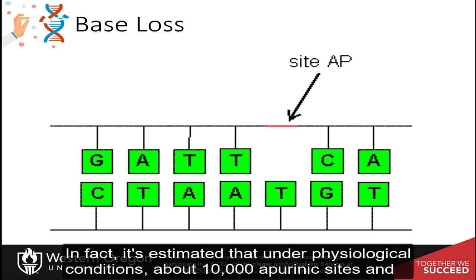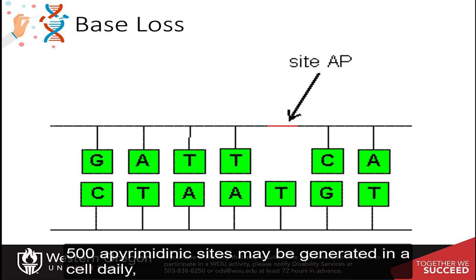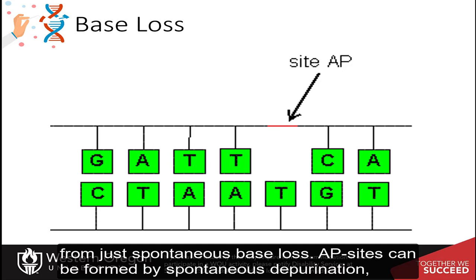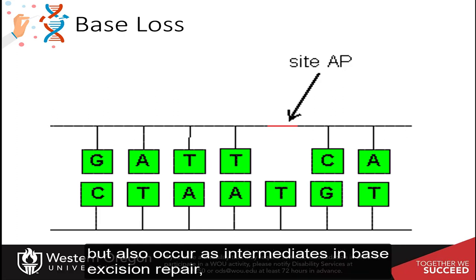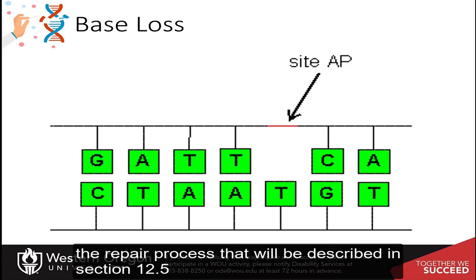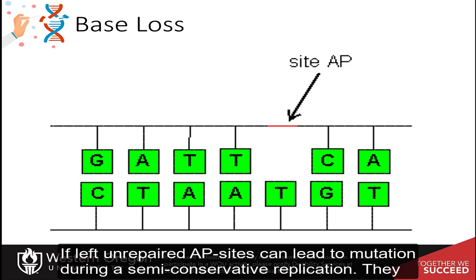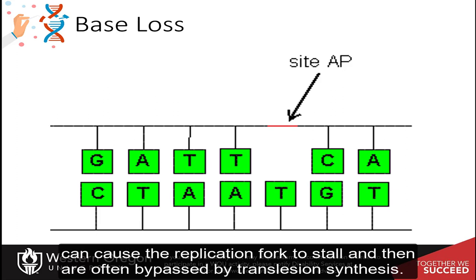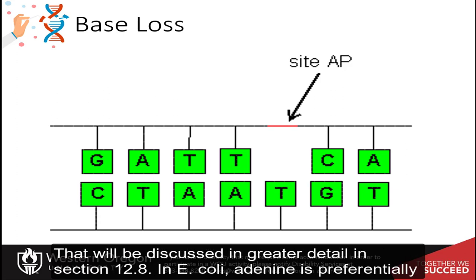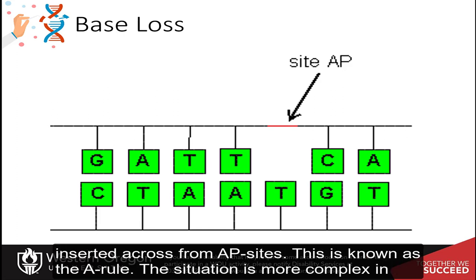Under physiological conditions, it is estimated that about 10,000 apurinic sites and 500 apyrimidinic sites may be generated in a cell daily from just spontaneous base loss. AP sites can be formed by spontaneous depurination but also occur as intermediates in base excision repair, the repair process described in Section 12.5. If left unrepaired, AP sites can lead to mutations during semi-conservative replication — they can cause the replication fork to stall, and are often bypassed by translesion synthesis, discussed in greater detail in Section 12.8. In E. coli, adenine is preferentially inserted across from AP sites, known as the A rule, though the situation is more complex in higher eukaryotes.